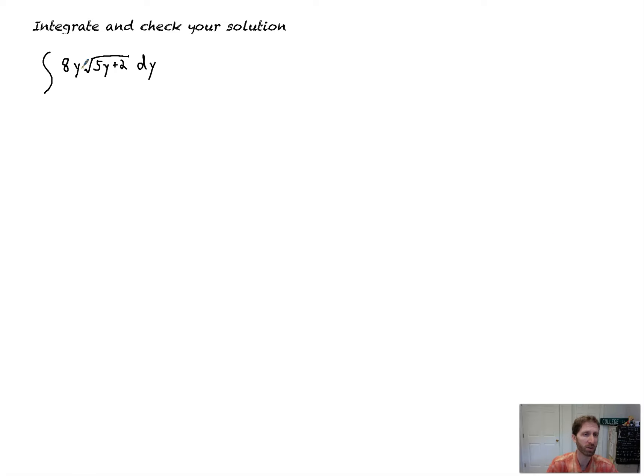In this particular problem, you've got a function where you've got 8y times root 5y plus 2. You've got a function within a function, so u-substitution's definitely on the menu here, but let's see what happens when we let u equal to that innermost function. So, I've got u equal to 5y plus 2.